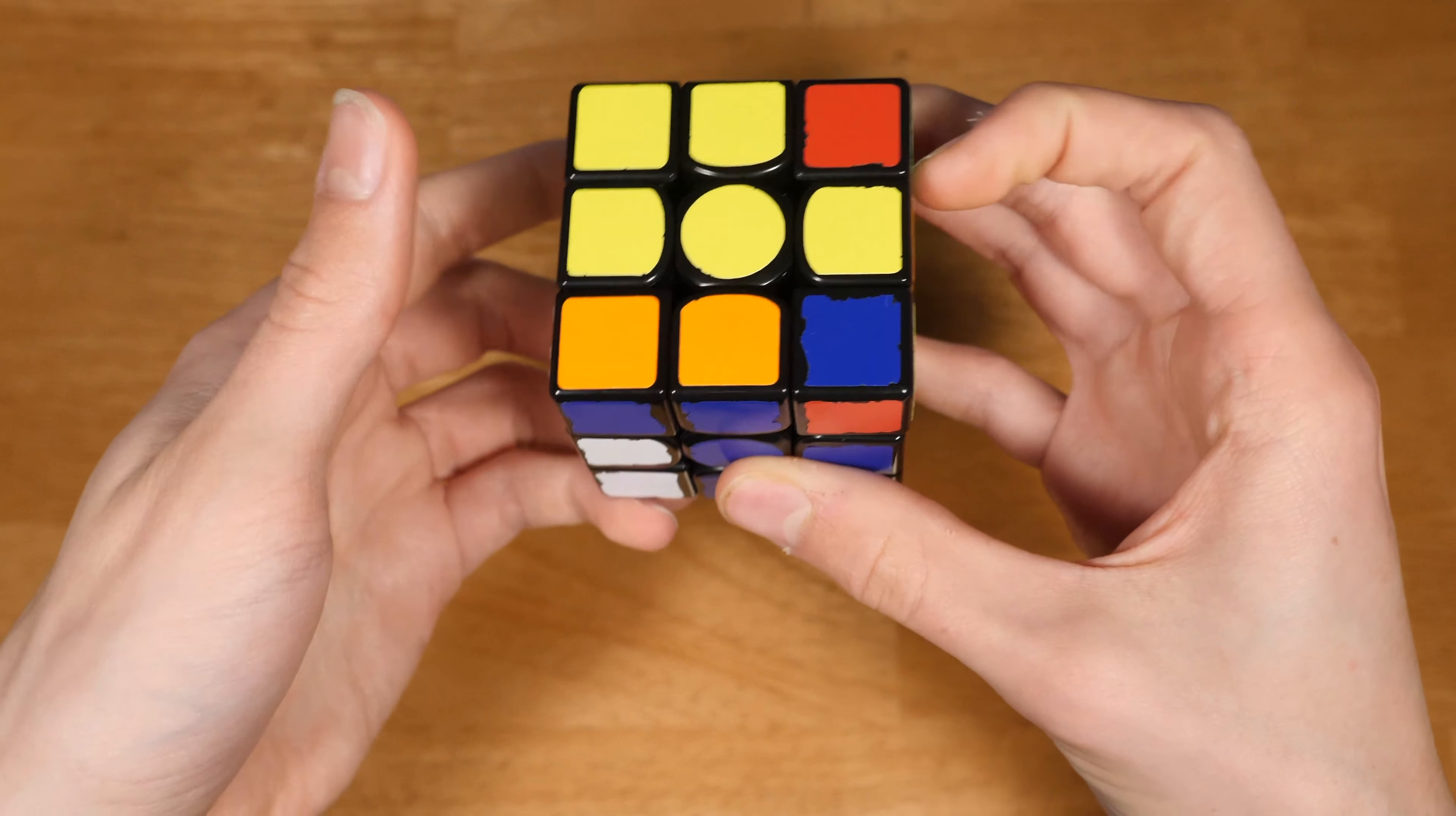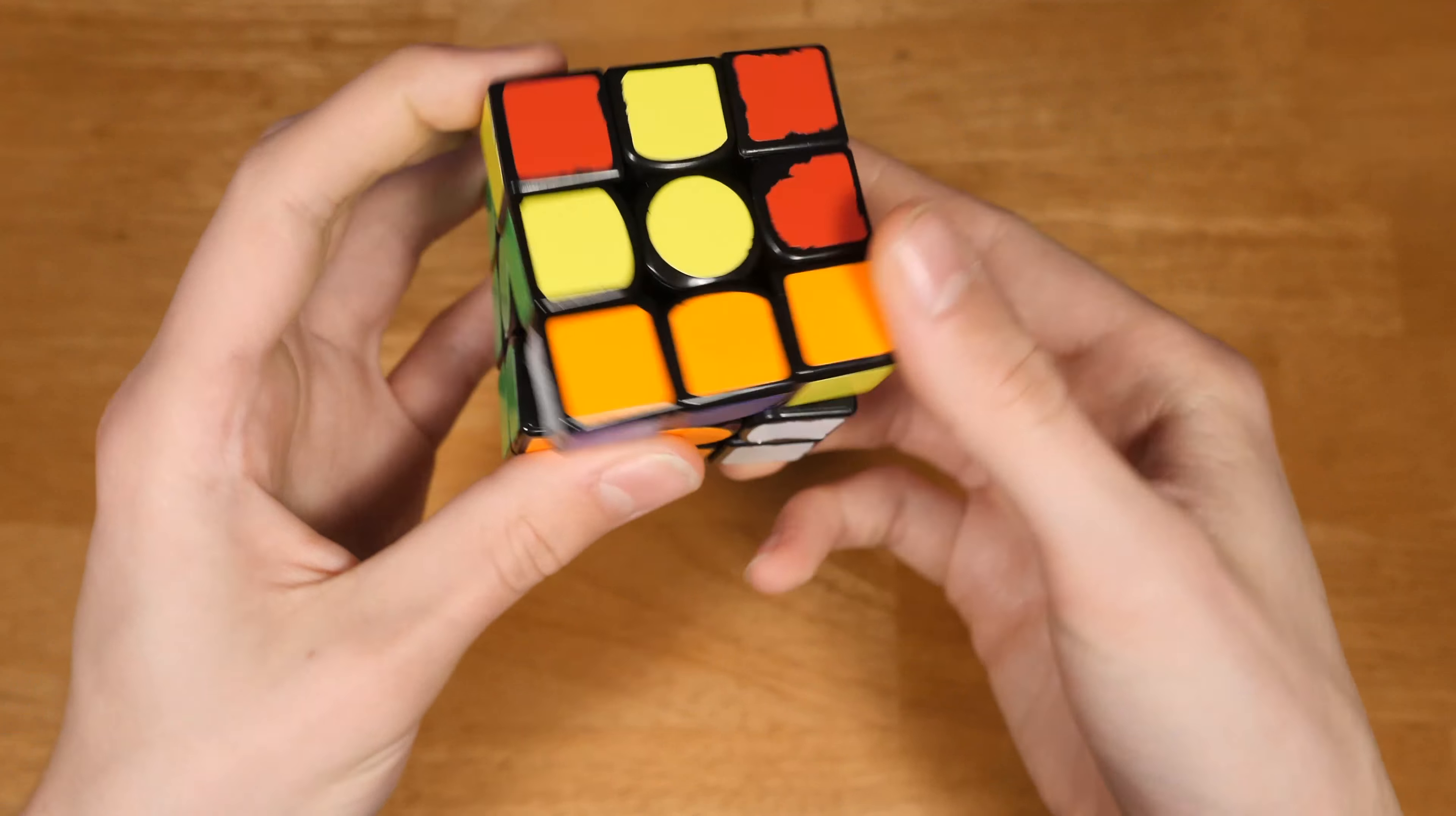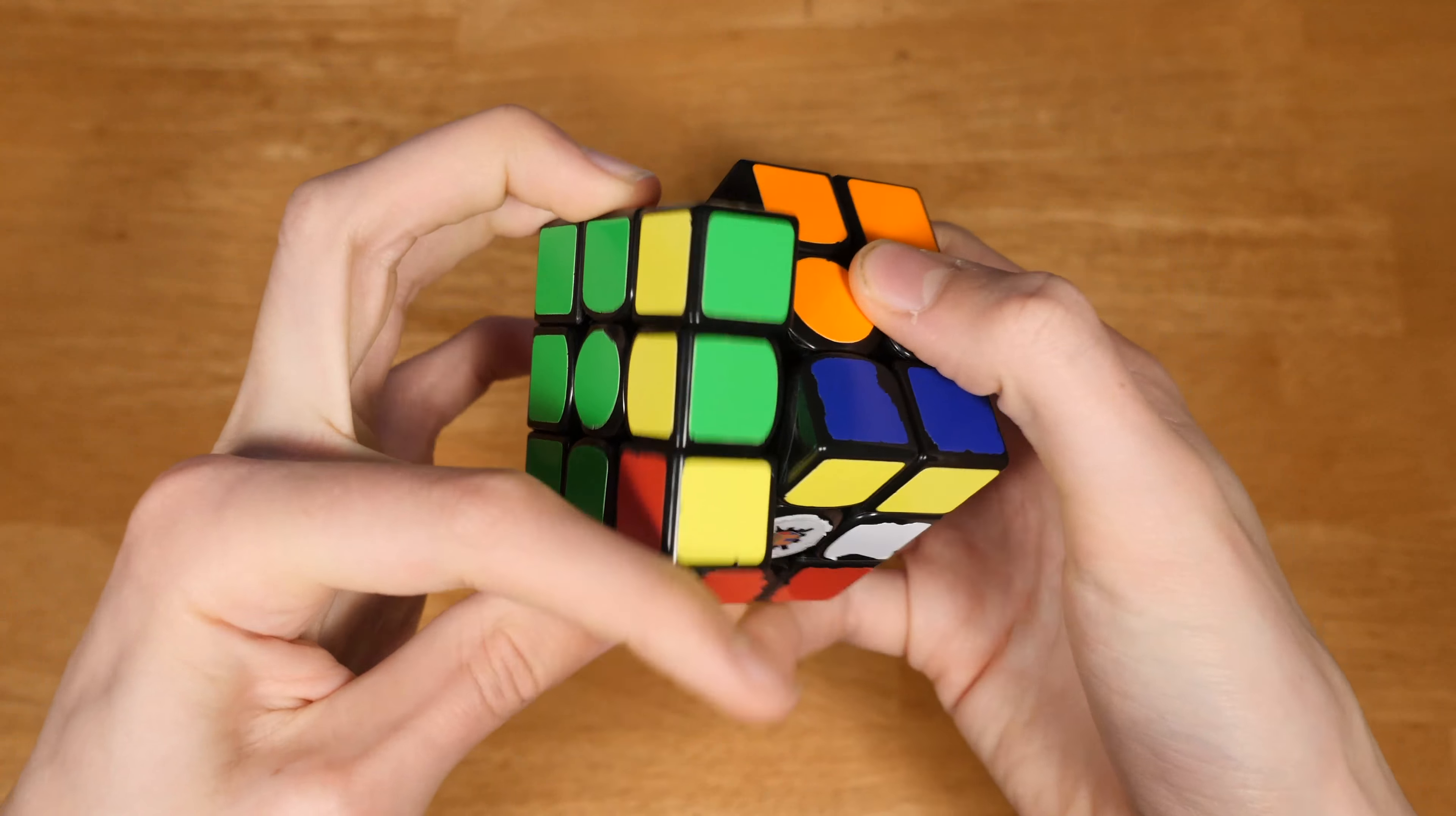Instead of doing something like this to insert it, which would be inefficient, he does this rotation. I think he subconsciously knows this will give him a good PLL case with a high chance for a PLL skip.